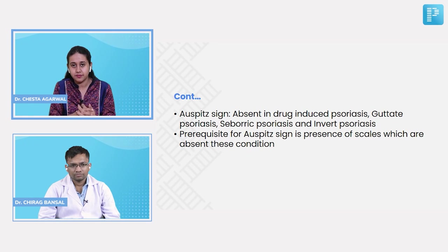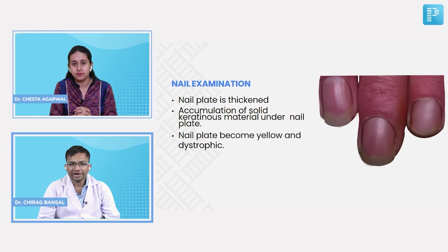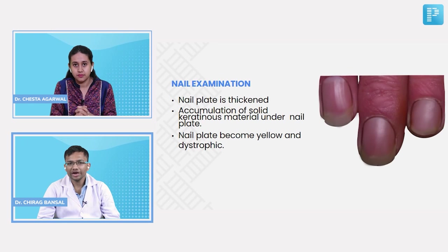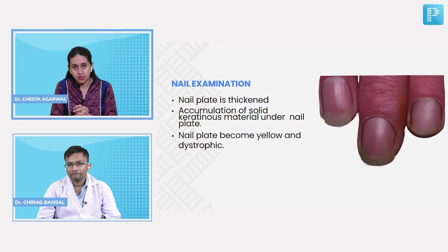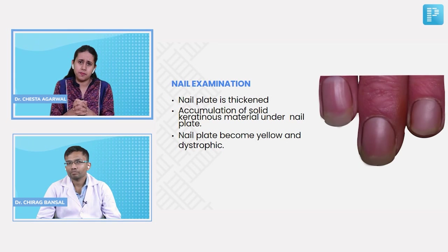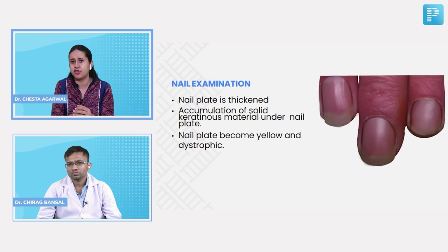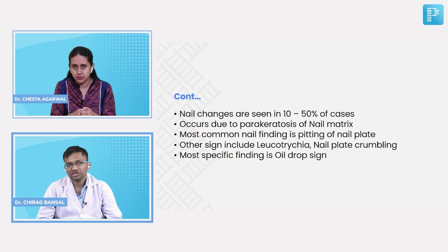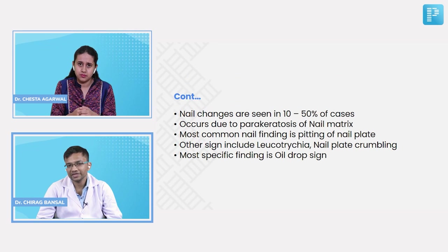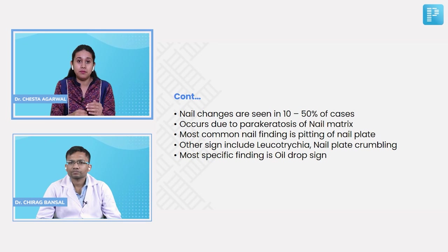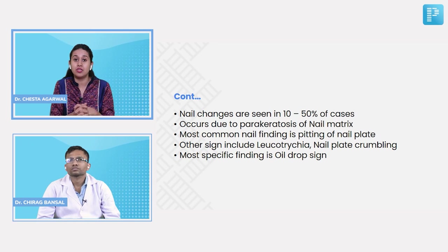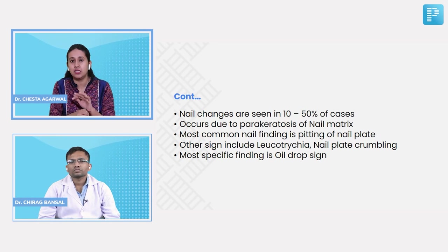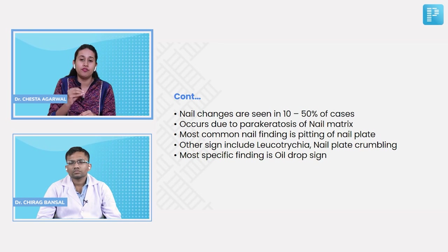On nail examination, nail plate is thickened with accumulation of solid keratinous material under the nail plate, and nail plate becomes yellow and dystrophic. Nail changes are not seen in all patients of psoriasis — they are seen in 10 to 50% of cases. The reason for nail psoriasis is parakeratosis of the nail matrix.